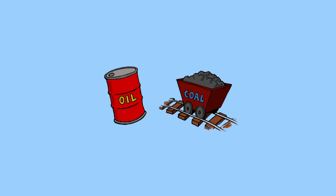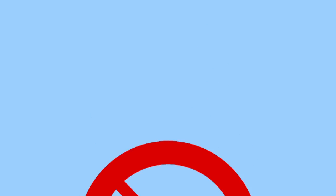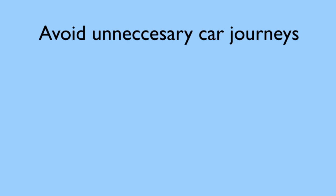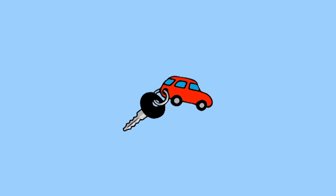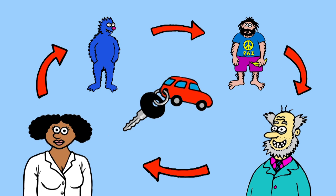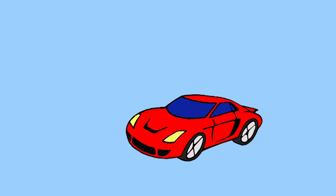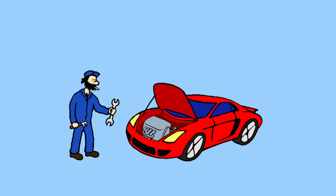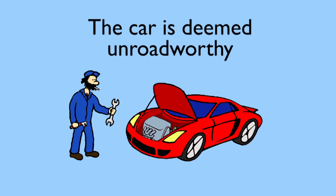Outside, particulate matter can be reduced by ensuring that we burn fewer fossil fuels. We can do this by not doing unnecessary car journeys, by making better use of public transport systems, by carpooling — sharing our cars with others — or by cycling. However, if we have to make a car journey, we must make sure that the car is regularly road tested. This way, the exhaust emissions can be monitored, and if the amount of unburned hydrocarbons are too high, the car is deemed unroadworthy and so cannot be driven.